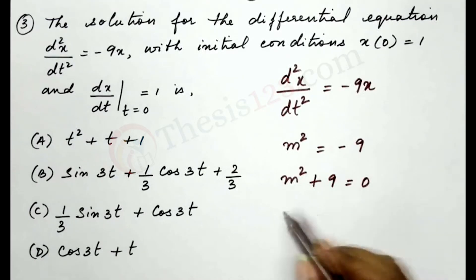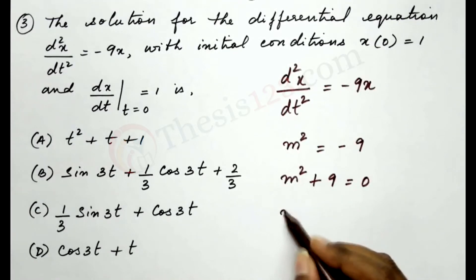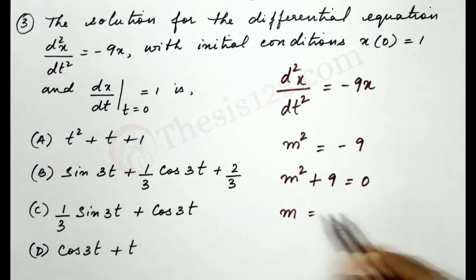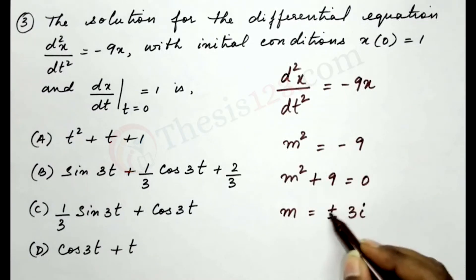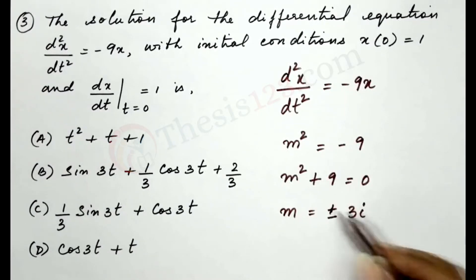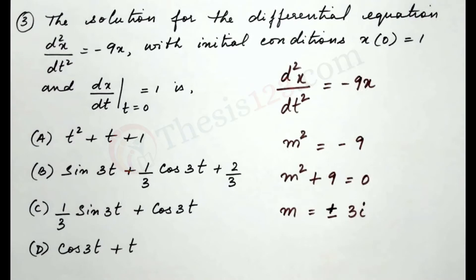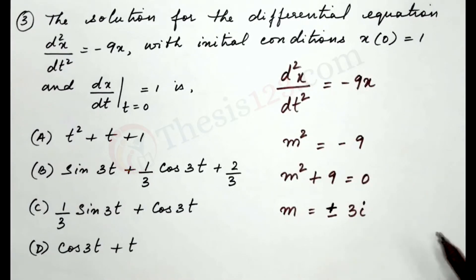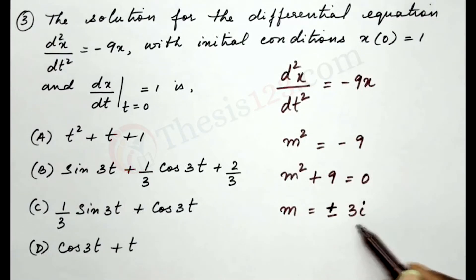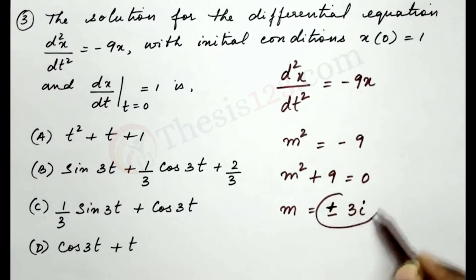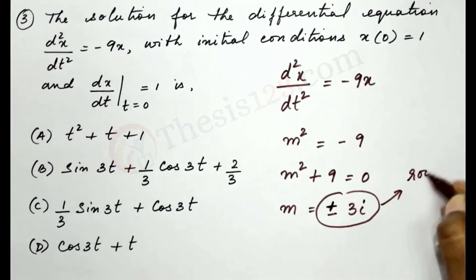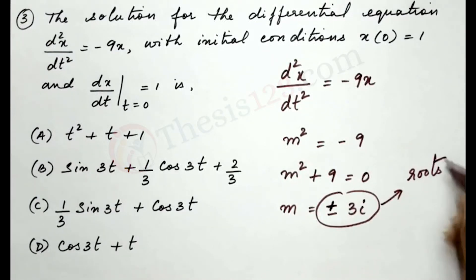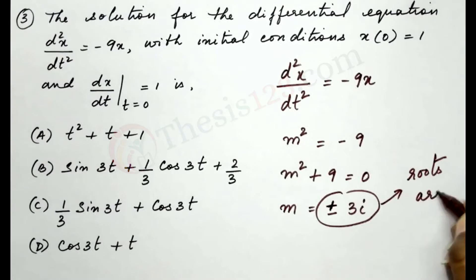What would the roots of m be? The roots of m would be ±3i. The next thing is to note the nature of the roots. Here we have i, which implies that the roots are complex.